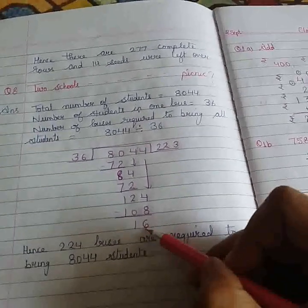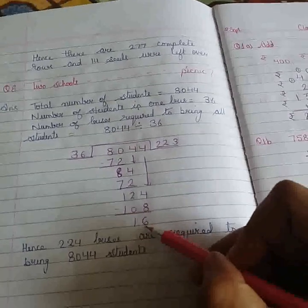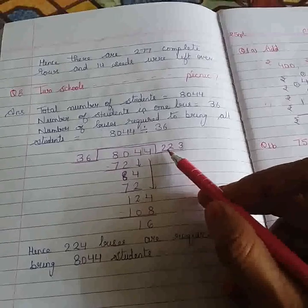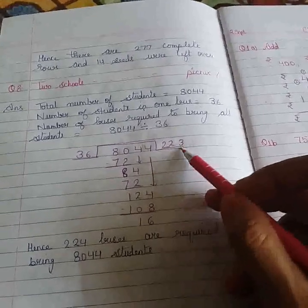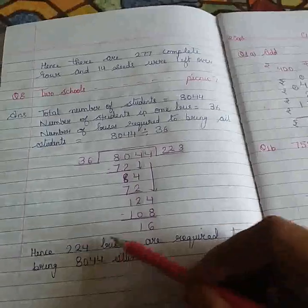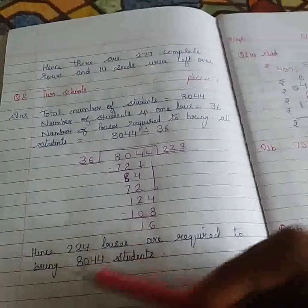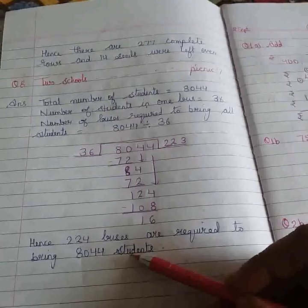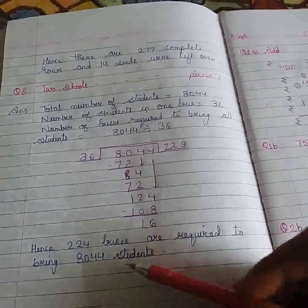Then for these 16 students we need 1 extra bus. So total number of buses required is 224. Hence, 224 buses are required to bring 8044 students for the picnic. That's it for today. Thank you.